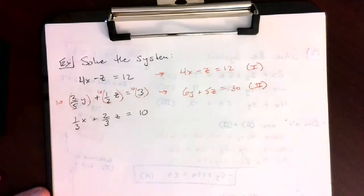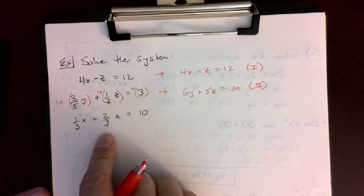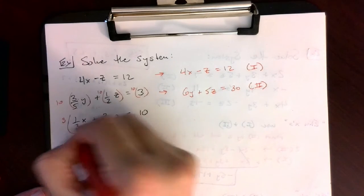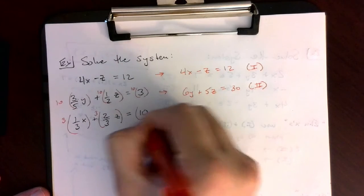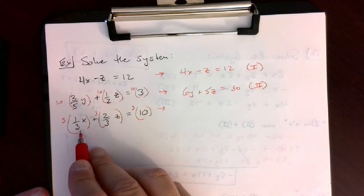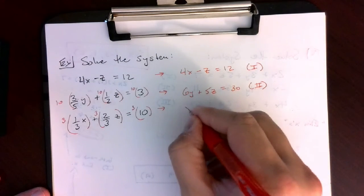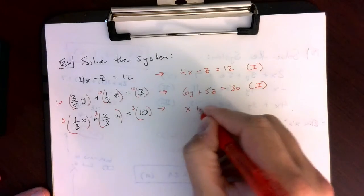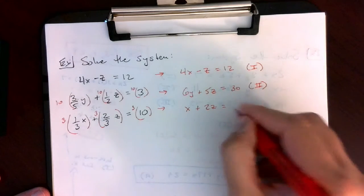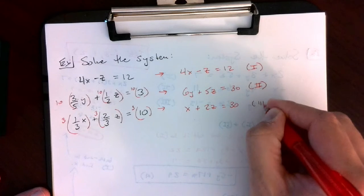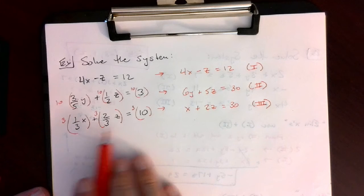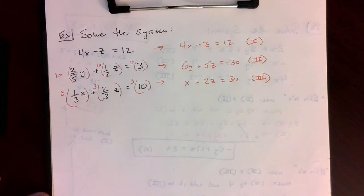The last equation, 1 third x plus 2 thirds z equals 10, the LCD is 3, so you multiply everything by 3. 3 times 1 third x gives you just x. 3 times 2 thirds z gives you plus 2z, and it equals 3 times 10, which is 30. This is equation 3. Clearing fractions is probably the easiest thing to do first.